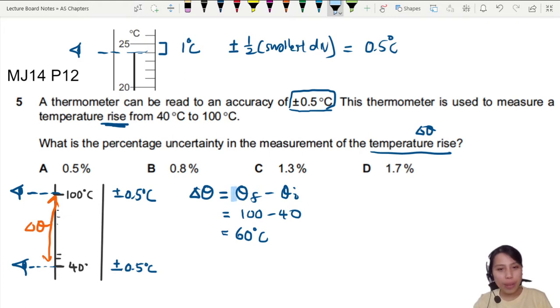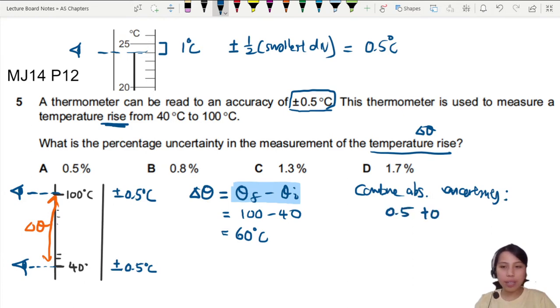How about the uncertainty? Now look very carefully. This is when we have two uncertainties. Each of these theta have its own uncertainty and we are minusing. So we want to combine uncertainty. Combine absolute uncertainty, which will be each time you read is 0.5. You read again is 0.5. So total uncertainty in the change in angle is going to be one Celsius plus minus. So we can say change in uncertainty, change in angle will be 60 Celsius plus minus one degree.